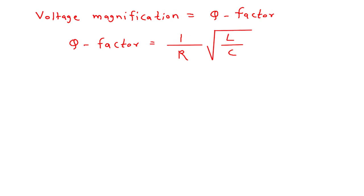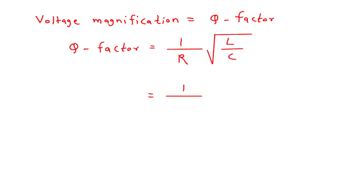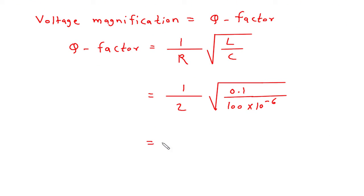This will be 1 upon, the value of resistance is 2 Ohm. So this will be 0.5 under root of L. The value of L is 0.1H divided by capacitance value, it is 100 microfarad, which will be 100 multiplied by 10 to the power minus 6.